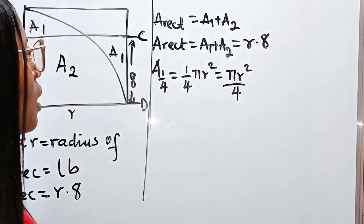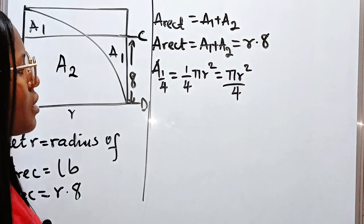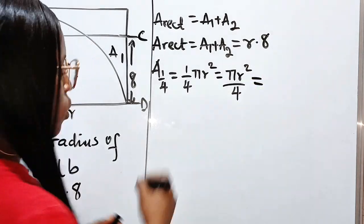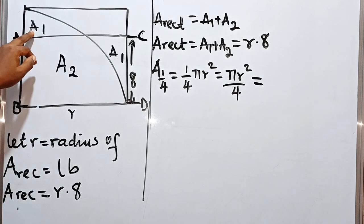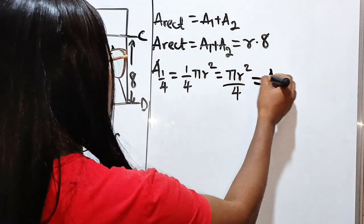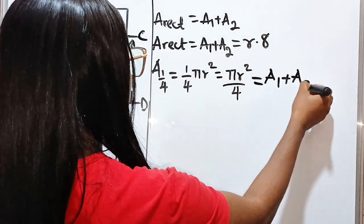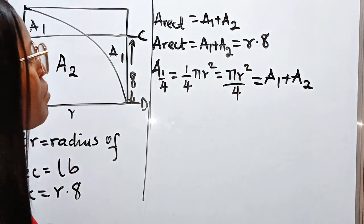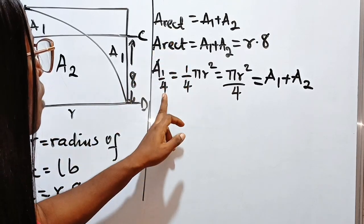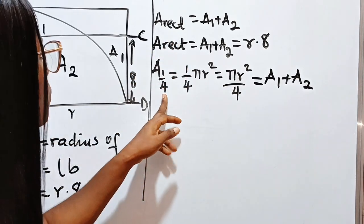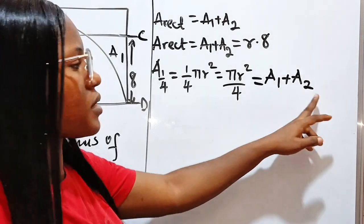And now, we can see that the area of the quadrant is also equal to A1 plus A2. Can you see that? A1 plus A2. So it simply means that the area of the rectangle is equal to the area of the quadrant, since both of them are equal to A1 plus A2.